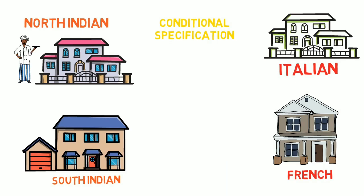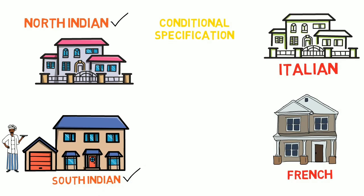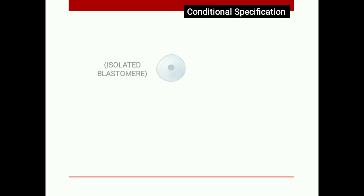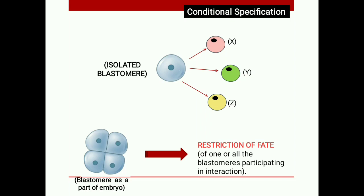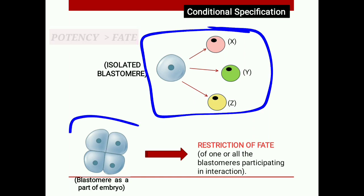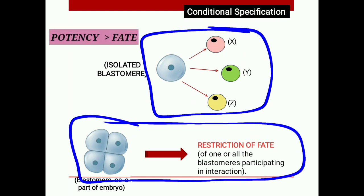If North Indian people are at the house, North Indian food is made; if South Indian people are there, South Indian food is made. The Italian guests might also get South Indian food depending on the condition. So the cook alters their actual output depending on which condition they are present in. Relating this to cells: one cell has the ability to create X, Y, and Z cell types, but depending on which cells it interacts with in the embryo, it has a particular fate.